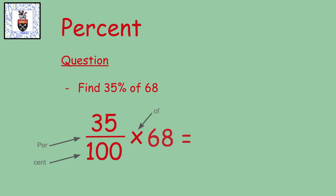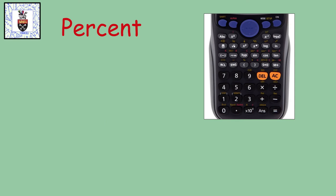35 percent of 68 gives us a total of 23.8. That's 35 divided by a hundred multiplied by 68. Let's look at that one more time with the calculator.